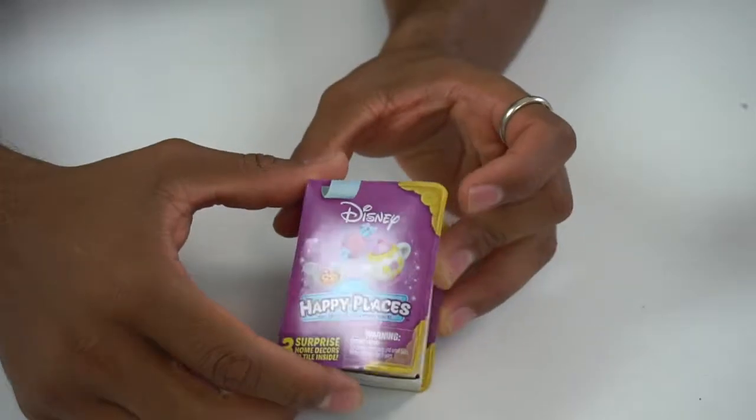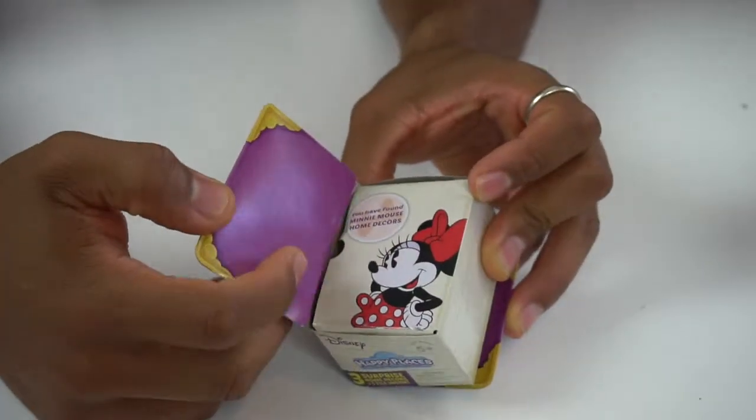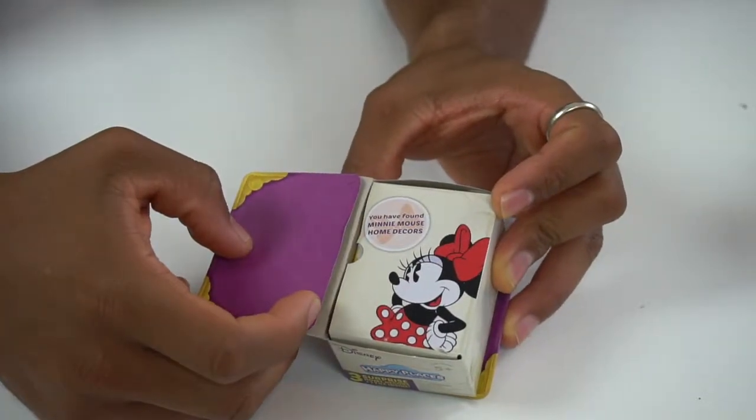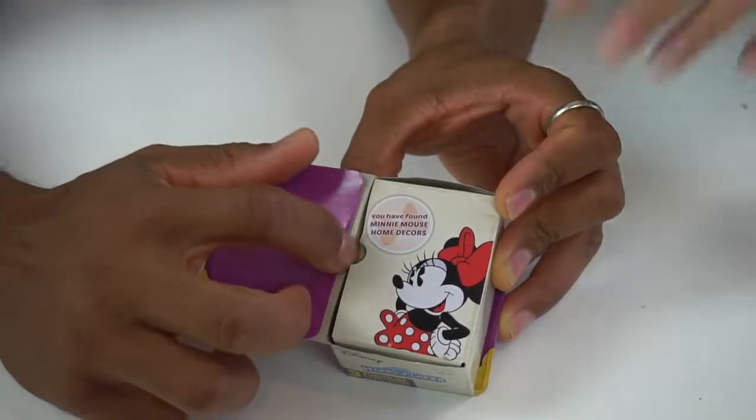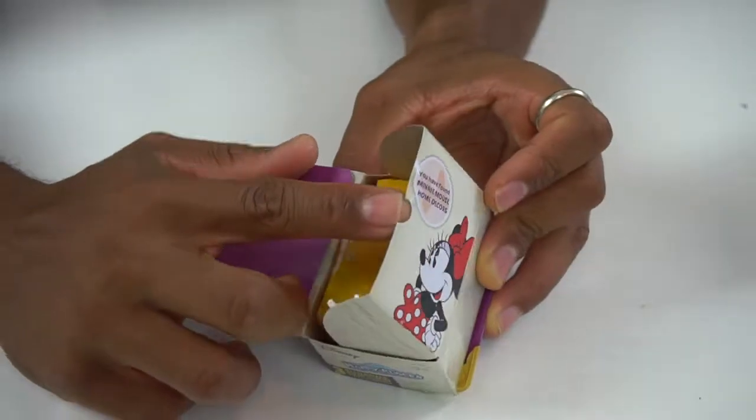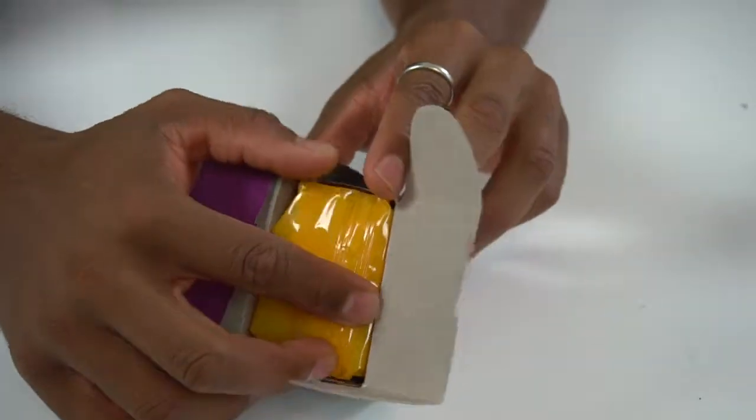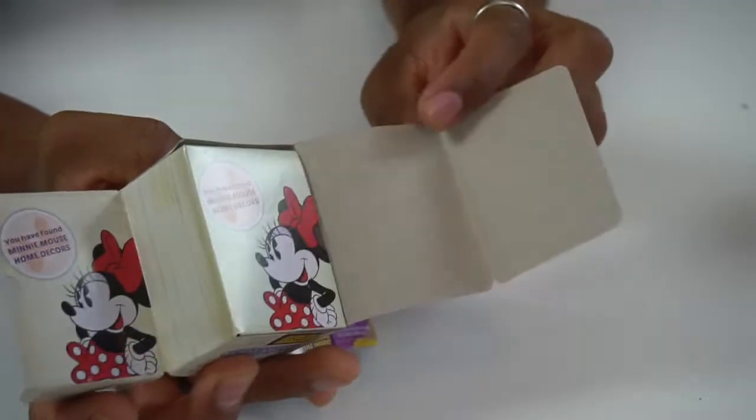Me too, that's what I was going to say. Right here you got your Happy Places, it opens like a book. Oh look, we got Minnie Mouse. Look at that, the book opens. That's cute. So you automatically know what you got from that category.